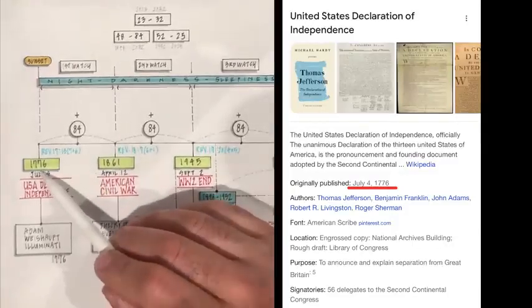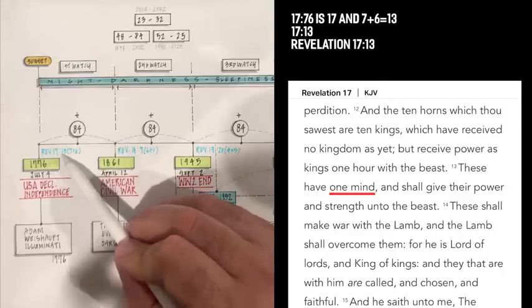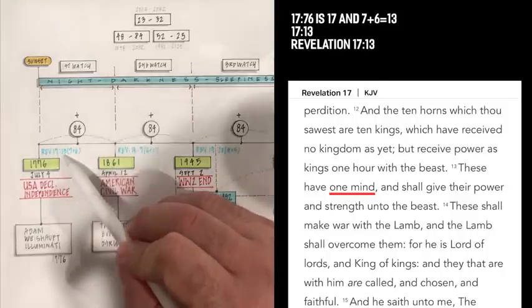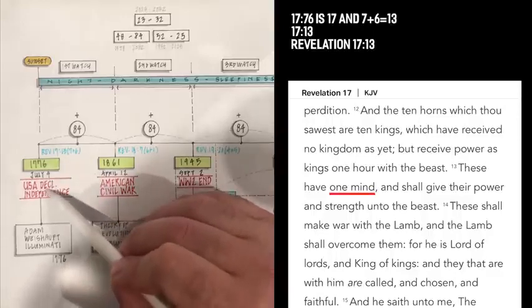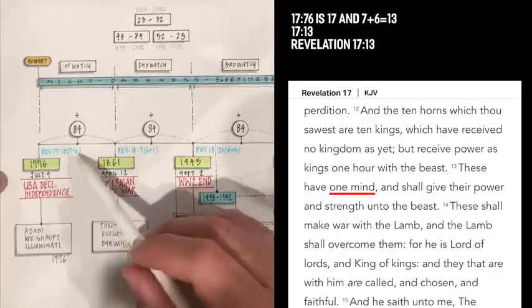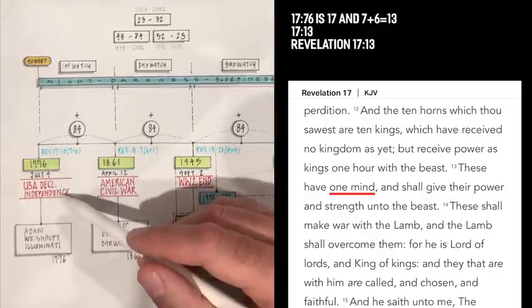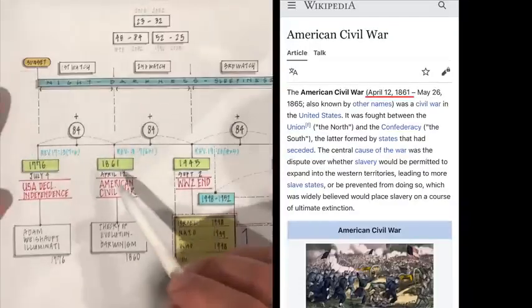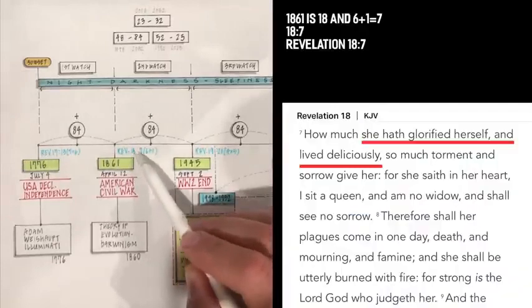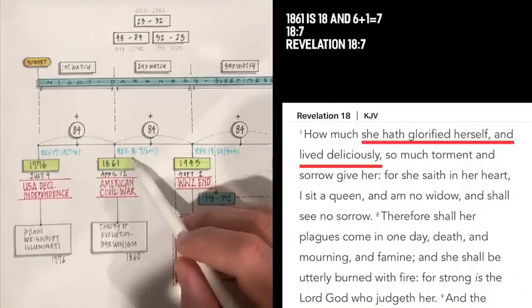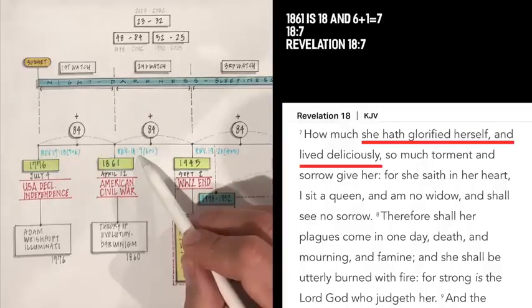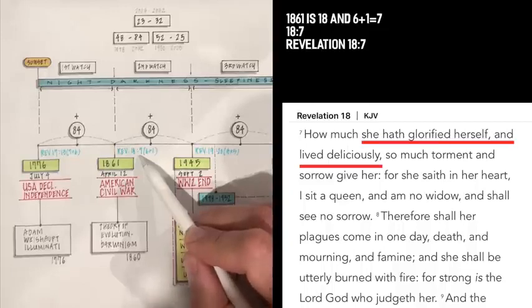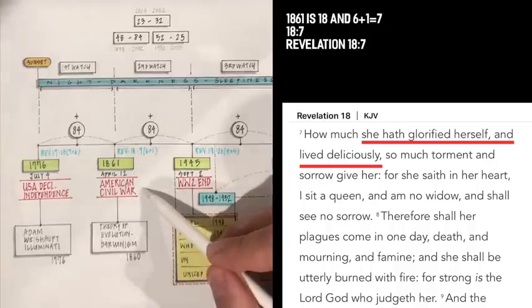So, look at this. 1776. And 7 plus 6 is 13. So, Revelation 17:13 says, These have one mind, and shall give their power and strength unto the beast. That's a good representation. Might not be the exact model, but very similar. So, look at this. 1861. That's Revelation 18. 6 plus 1 is 7. And Revelation 18:7 says, How much she has glorified herself and lived deliciously, so much torment and sorrow give her. For she said in her heart, I sit as a queen, and I am no widow, and shall see no sorrow.